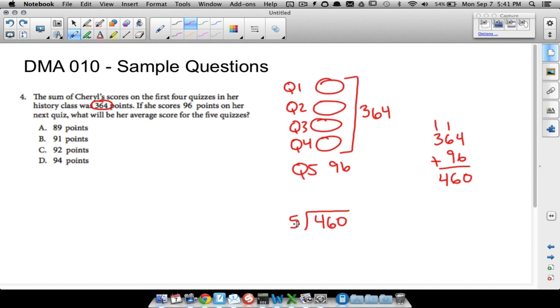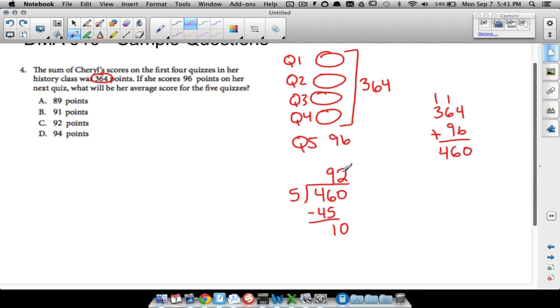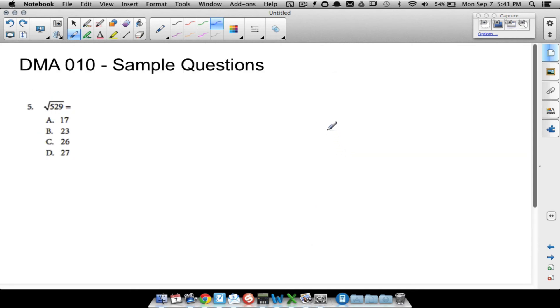The reason why I'm dividing by 5 is because there are 5 quizzes. 5 doesn't go into 4. 5 times 9 is 45, that's as close as we can get to 46 without going over. 46 minus 45 is 1, bring down your 0. 5 goes into 10 two times, and 2 times 5 is 10, so we have a remainder of 0. This is going to be her average for those 5 quizzes: 92. That one's kind of tricky because some people may take this plus this and divide by 2, but you got to remember this 364 was essentially four quiz grades already added together.